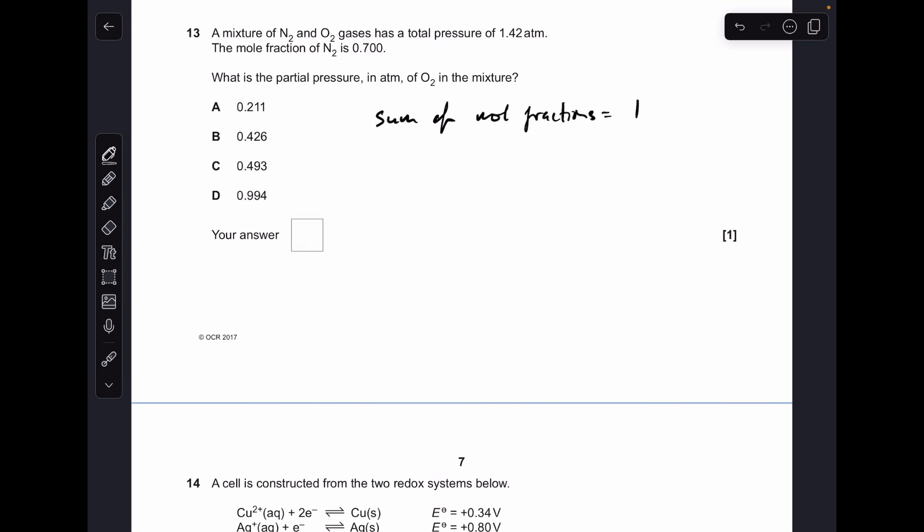Question 13, so I've written up there the sum of the mole fractions has to equal one. I've only got two gases in the mixture so if the mole fraction of nitrogen is 0.7 the mole fraction of O2 has to be 0.3. So the partial pressure now is equal to the mole fraction times the total pressure which comes out at 0.426 so the answer is B.